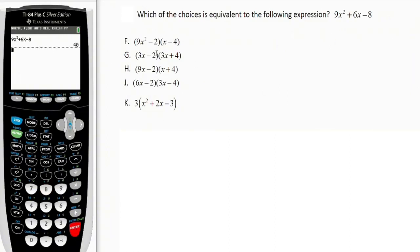Right now we're going to use the same stored value to simplify each of these options. Whichever gives us 40 will be the answer to this question. Let's begin with option F. We have in brackets (9x² - 2), close the brackets, open another bracket (x - 4), close the brackets. Press equal to see if we're going to have 40. No.